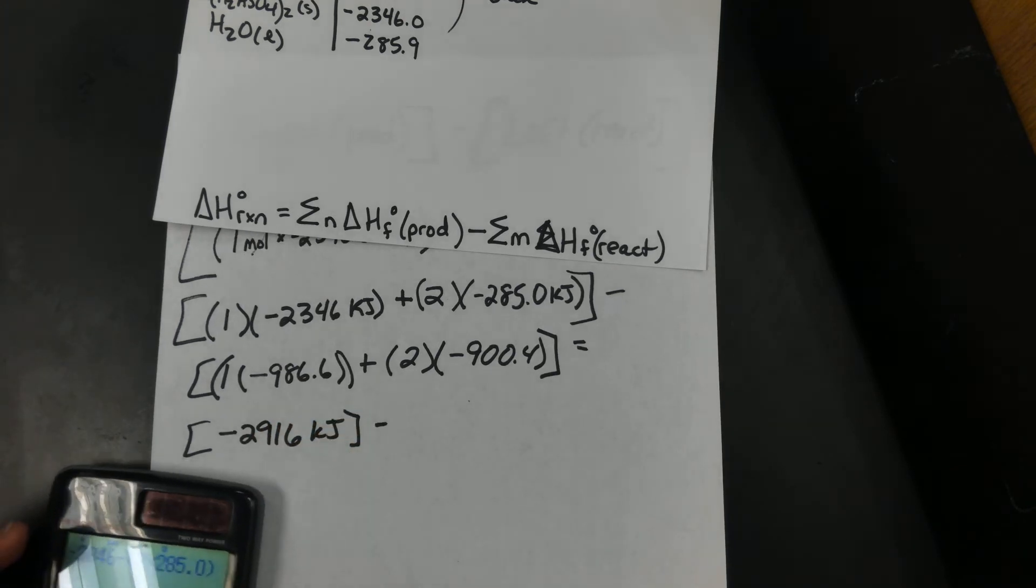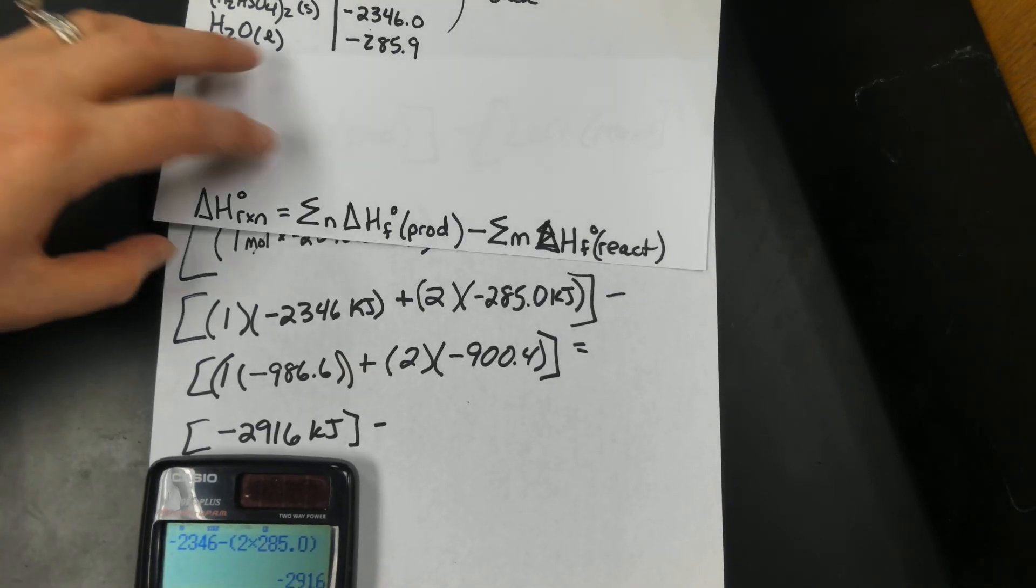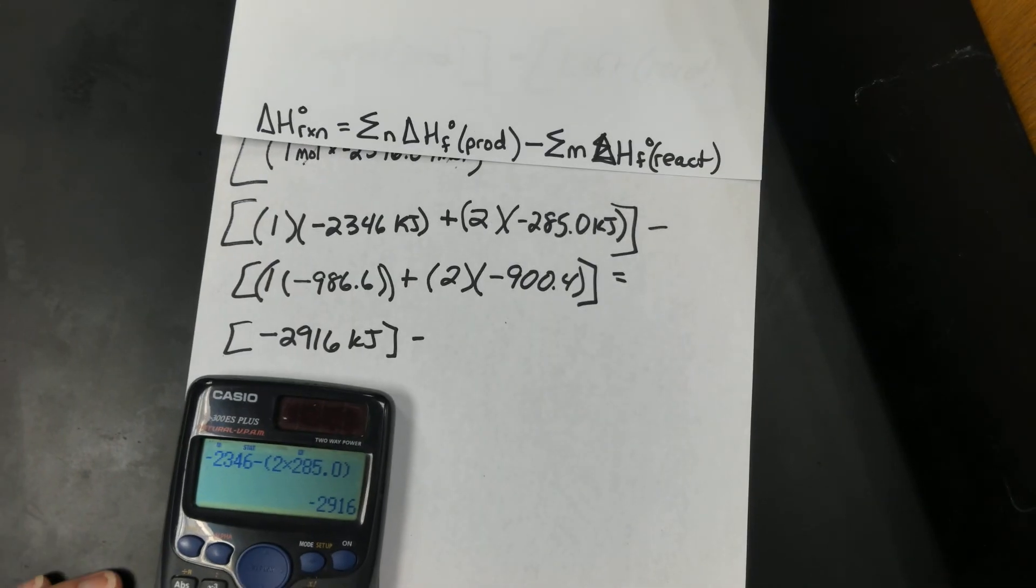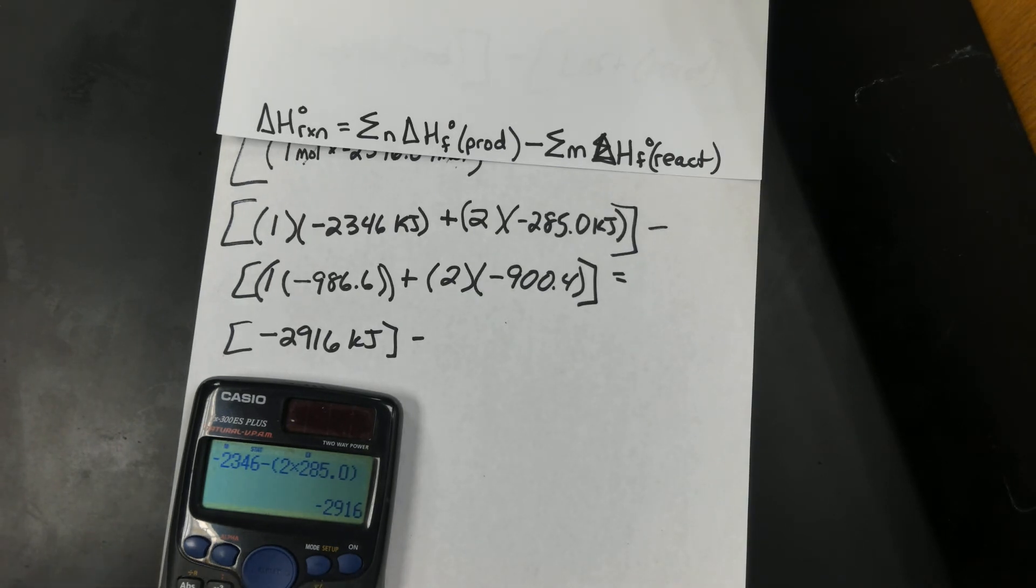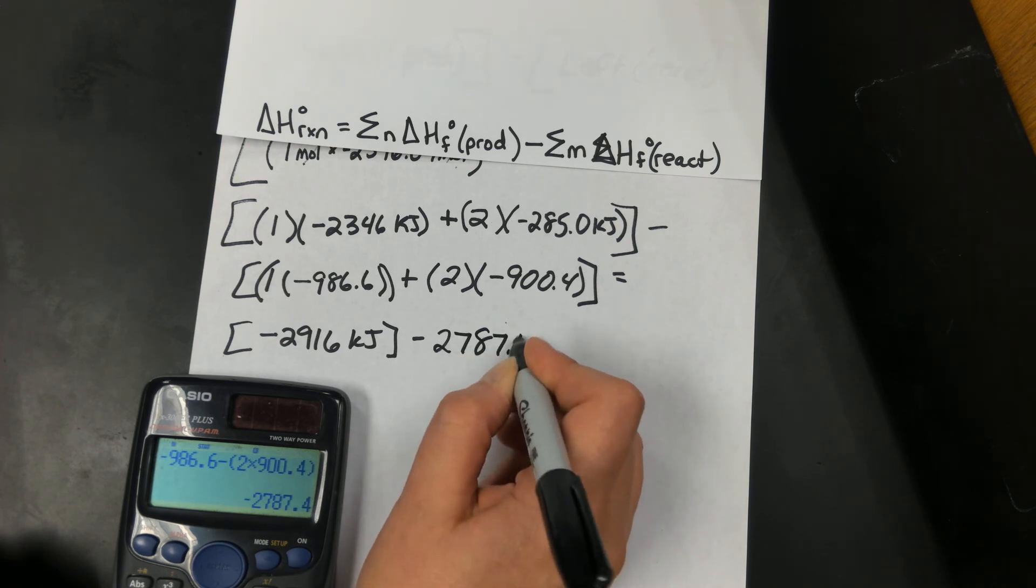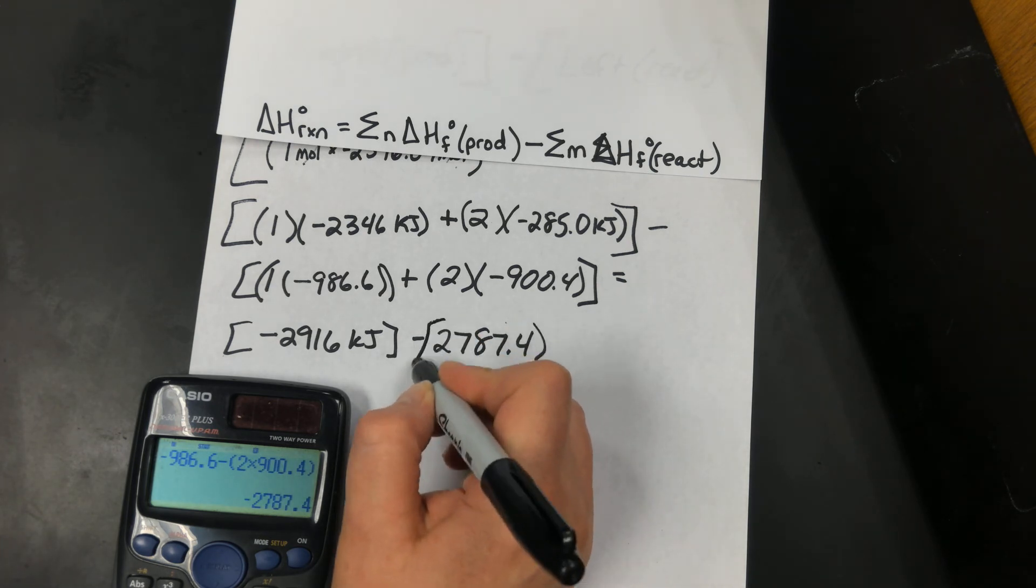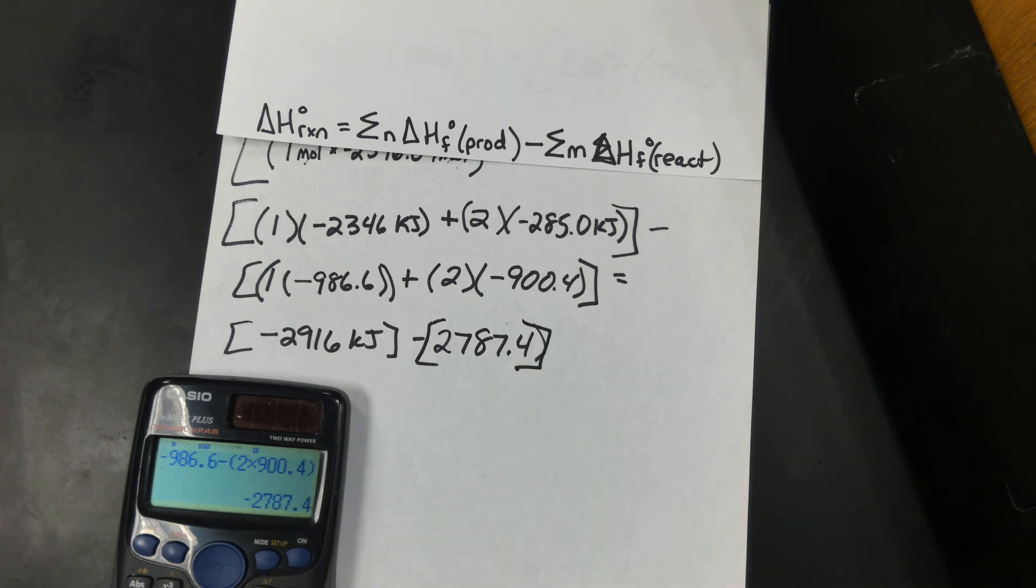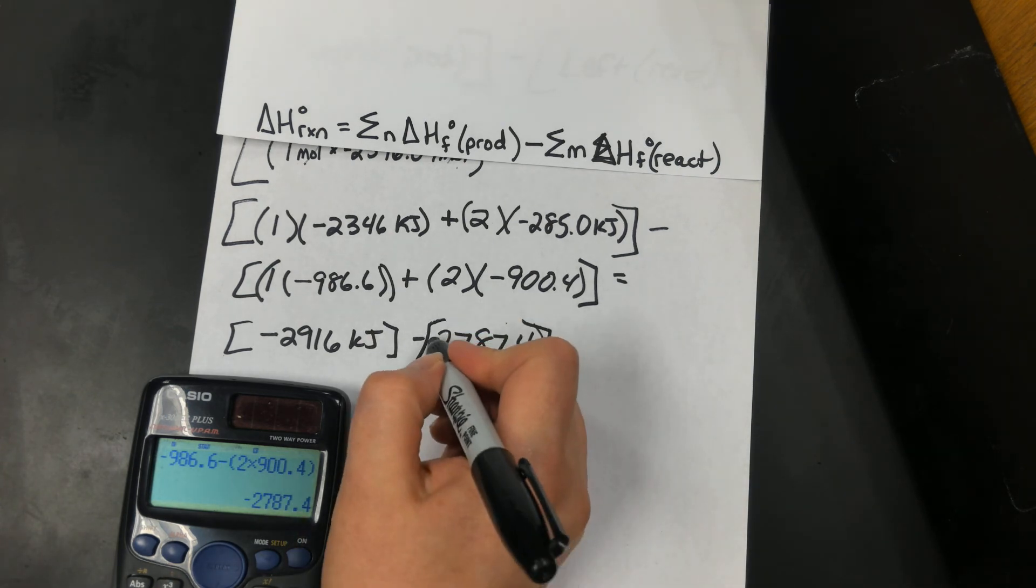So it's right side minus the left side. So what's on my left side? It's going to be negative 986.6 minus whatever 2 times 900.4 is. So the left side is negative 2787.4 kilojoules.